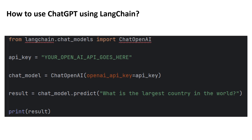Now let's see how we can interact with ChatGPT using Langchain. You first need to import ChatOpenAI from langchain.chat_models. Then you paste your API key and create a ChatGPT model object using ChatOpenAI, providing the API key as an input argument. If you want to ask questions from ChatGPT, you can use chatmodel.predict and specify your question. You get the result in a variable and print it to see the output response.